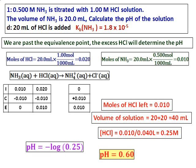The pH of the solution depends only on the hydrogen ion concentration from HCl, which equals the concentration of HCl. The contribution from the reaction of ammonium ions with water will be negligible, so it is not added into the hydrogen ion concentration.